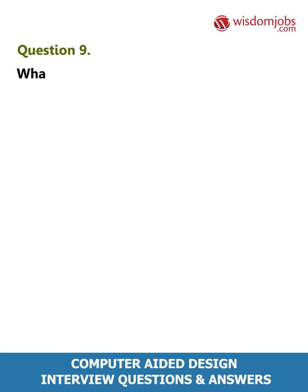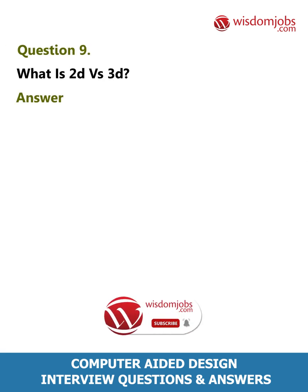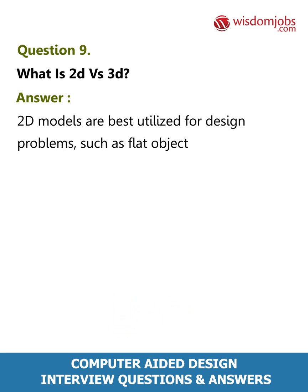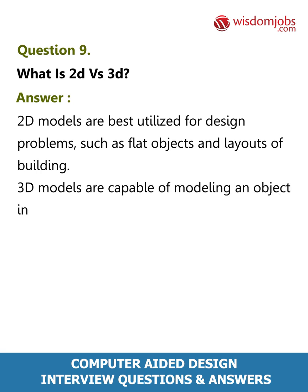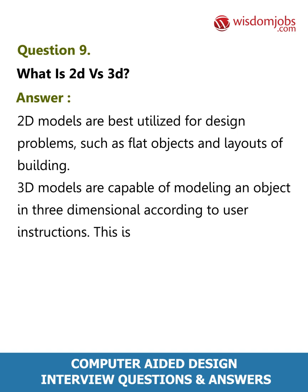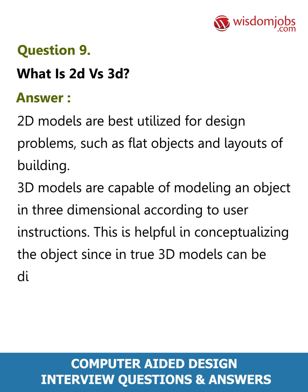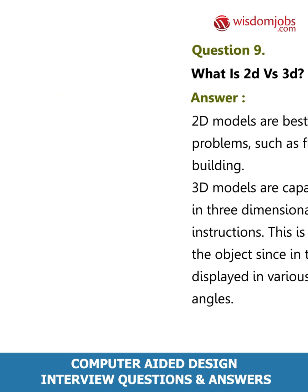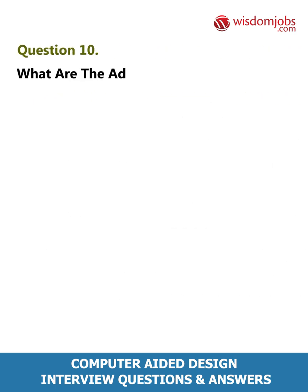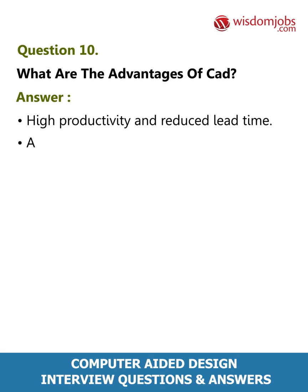Question 9: What is 2D vs 3D? Answer: 2D models are best utilized for design problems such as flat objects and layouts of buildings. 3D models are capable of modeling an object in three dimensions according to user instructions. This is helpful in conceptualizing the object, since true 3D models can be displayed in various views and from different angles.